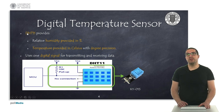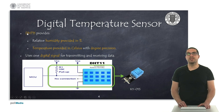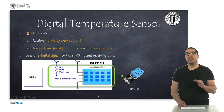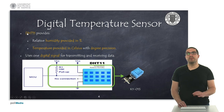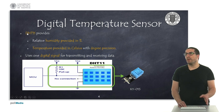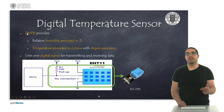Then we have different kinds of temperature sensors. We have the DHT11, which is a digital sensor and provides humidity and temperature in Celsius with degree precision, so it's not sub-degree. This uses one digital signal for transmitting and receiving data. Here you can find the KY-015 module, which provides again three pins for power, ground, and the signal itself.